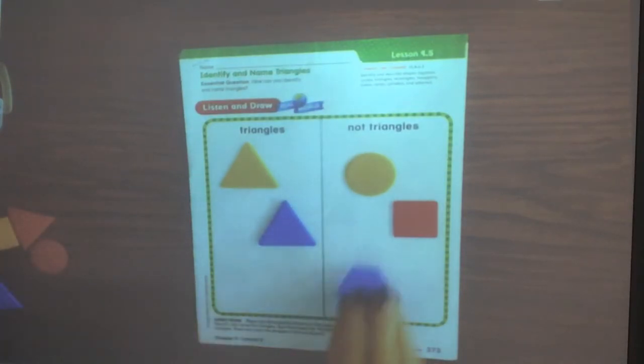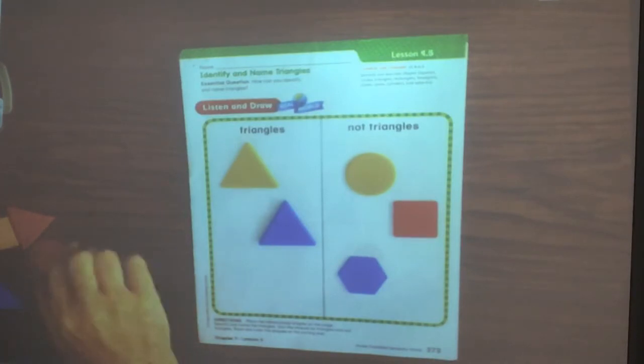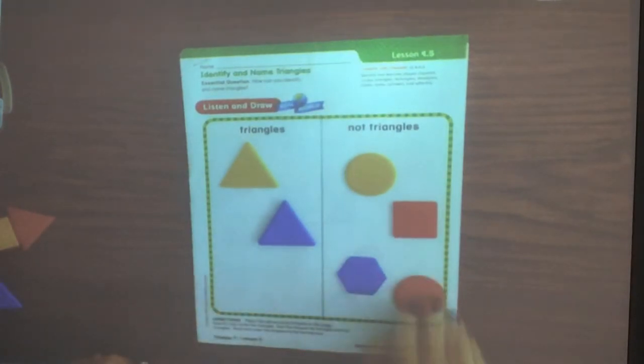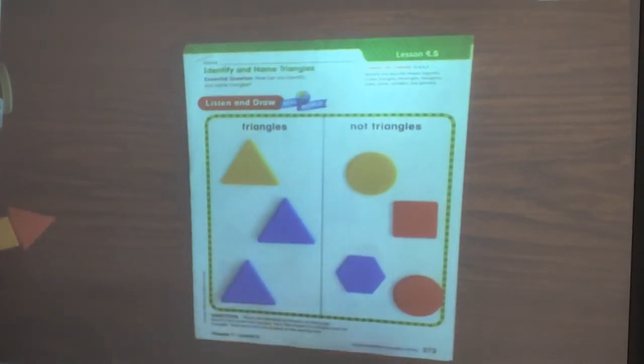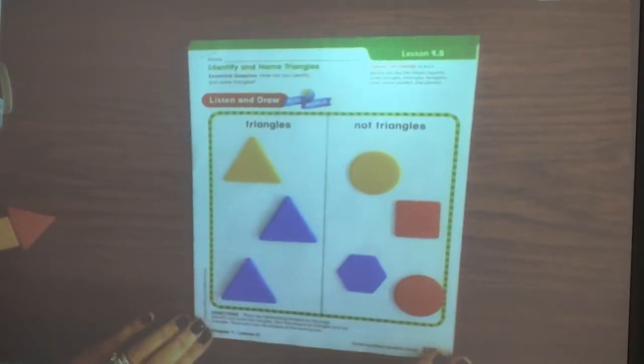What about this one? This is called a hexagon. It has one, two, three, four, five, six sides. That is a hexagon. There is another circle. Oh, here is another triangle. Three sides and three vertices or three corners.